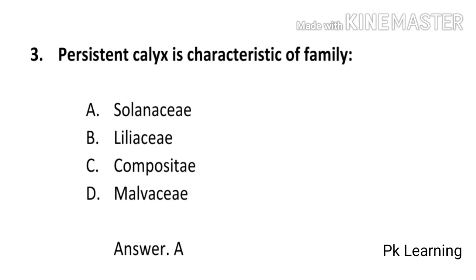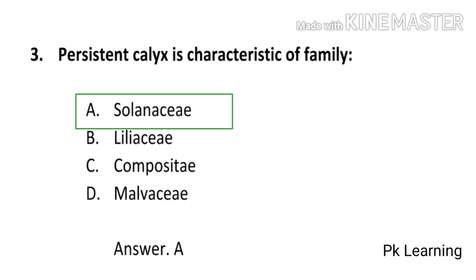Next question: Persistent calyx is characteristic of the family — (a) Solanaceae, (b) Liliaceae, (c) Compositae, (d) Malvaceae. The answer is (a) Solanaceae. Persistent calyx is characteristic of Solanaceae.